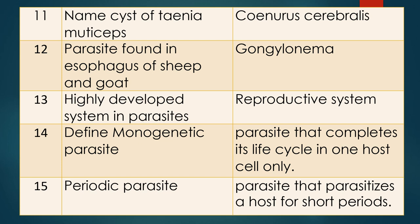Question twelve: Parasite found in the esophagus of sheep and goat. Answer is Gongylonema. Question thirteen: Which system is highly developed in parasites? There are many systems in parasites, but the parasite lays a large number of eggs. The answer is the reproductive system.